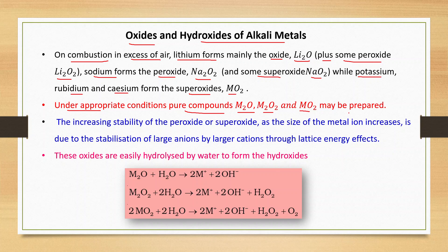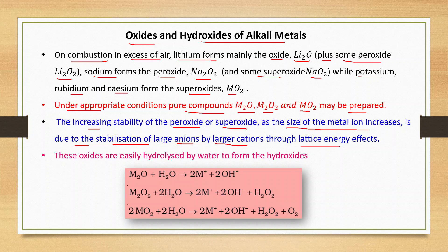The increasing stability of the peroxide or superoxide as the size of the metal ion increases is due to the stabilization of large anions by larger cations through lattice energy effects. A large anion forms a stable compound with a larger cation, and a smaller anion forms a stable compound with a smaller cation. So potassium, rubidium, and cesium form stable superoxides.